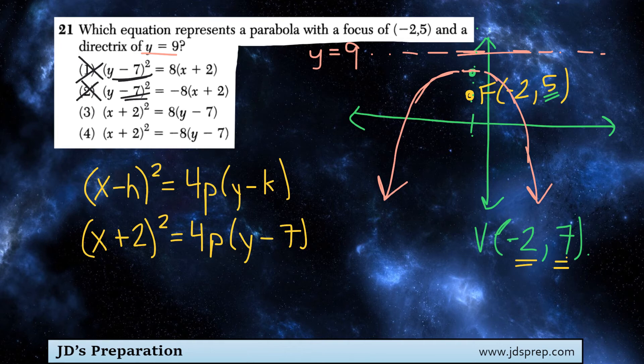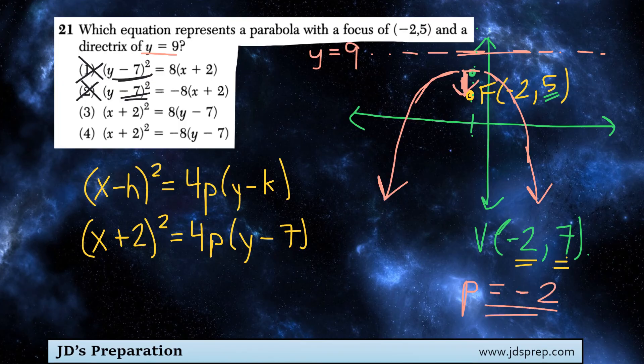Now we just need to figure out our p value. To find the p value, we need to look at the distance between the vertex and the focus. And we can see visually, pretty quickly, that that distance there is 2. But because it's moving downwards in a negative direction, the value of p is actually negative 2. So 4p is actually the same thing as 4 multiplied by negative 2, which is negative 8.